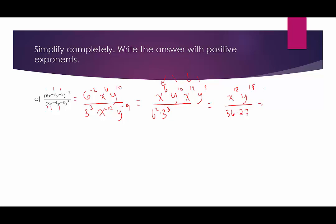6 squared is 36, and 3 cubed is 27. This would be a good time to have a calculator handy. So if we rewrite it, it would be x to the 18th, y to the 19th, over 972. And that's as simplified as it can get — all the exponents are positive, so we're good and ready to move on.